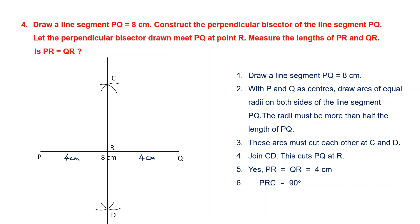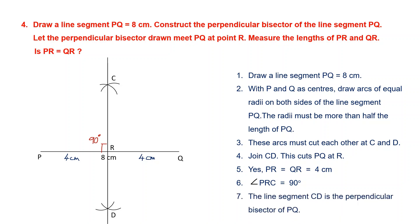Angle PRC equals 90 degrees. This is another condition that must be satisfied for a perpendicular line — it meets PQ at 90 degrees and goes right through the middle. So CD is the perpendicular bisector of PQ.